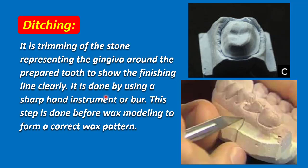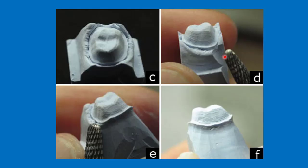This step is done before wax modeling to form a correct wax pattern. As you can see here, this part of stone represents the gingiva. In areas, it covers the finishing line, so it must be removed so proper access to the finishing line can be achieved. It can be removed by prosthetic burrs, but care must be taken not to hit the finishing line. As you can see here, this is the finishing line very clear.